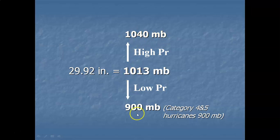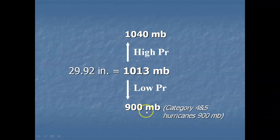For low pressure, readings fall below 1,013 down to about 900 millibars — the lowest pressure you'll ever get, usually in a very strong hurricane.